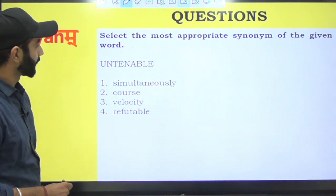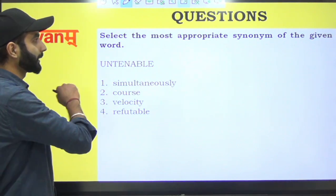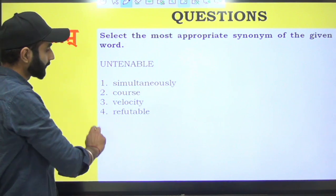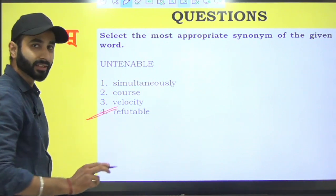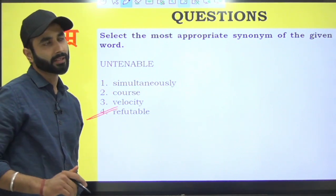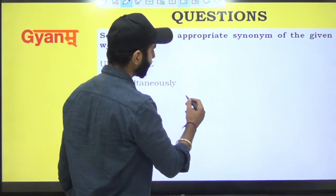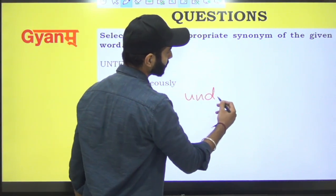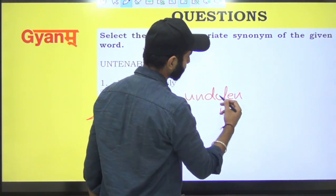Untenable. Untenable ka synonym pata karna. Untenable ka matlab hota hai refutable. Something that cannot be defended. Jaise hum bolte na bhai, yeh cheez toh undefendable hai. Isko defend nahi kar sakte.